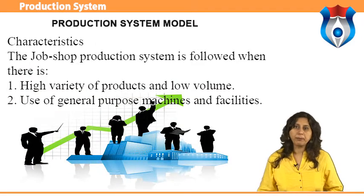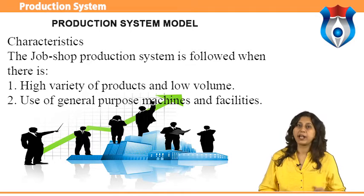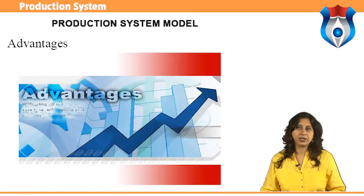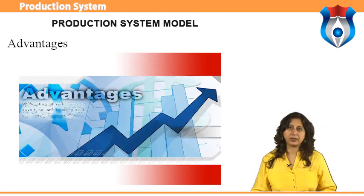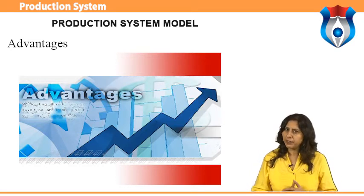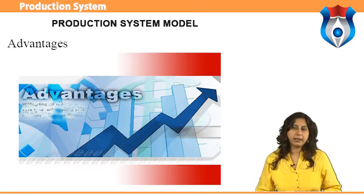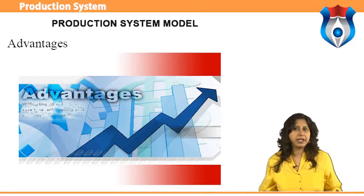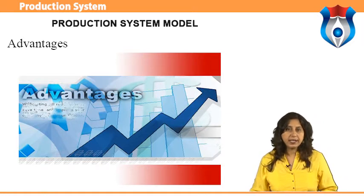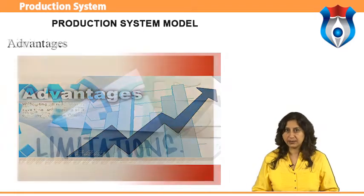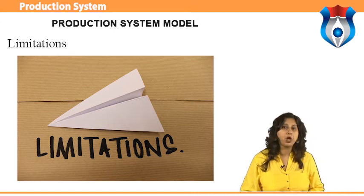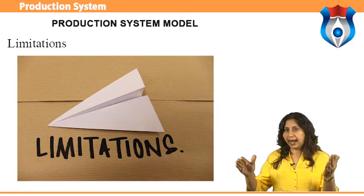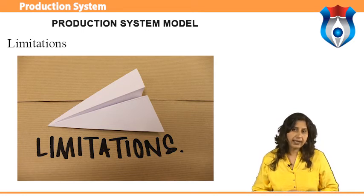The job shop production system is followed when there is high variety of products and low volume, using general purpose machines and facilities. Advantages include: variety of products can be produced; operators become more skilled and competent as each job gives learning opportunities; full potential of operators can be utilized; and opportunity exists for creative methods and innovative ideas. Limitations include: higher cost due to frequent setup changes; higher level of inventory at all levels; production planning is complicated; and larger space requirements.